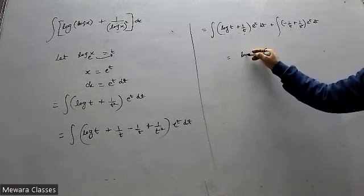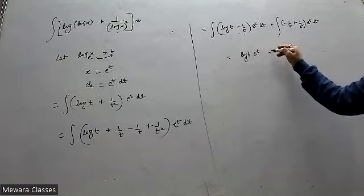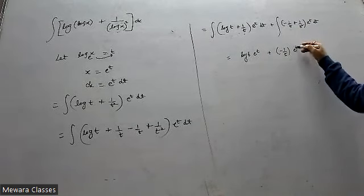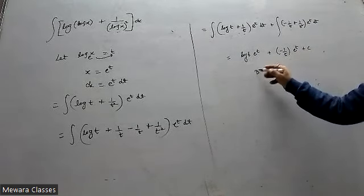So we'll get log t e to the power t by property, and we'll get minus 1 by t e to the power t by property. Just apply property.